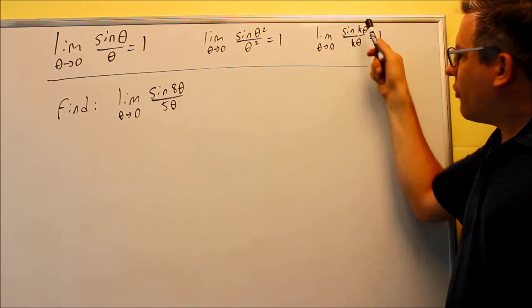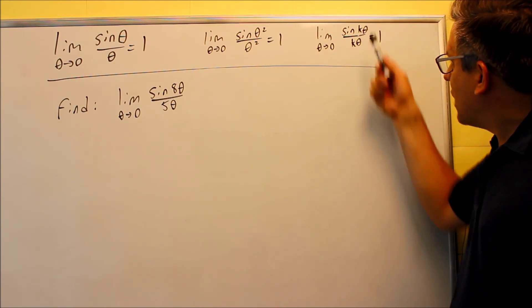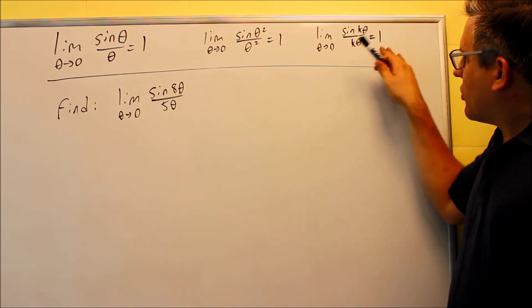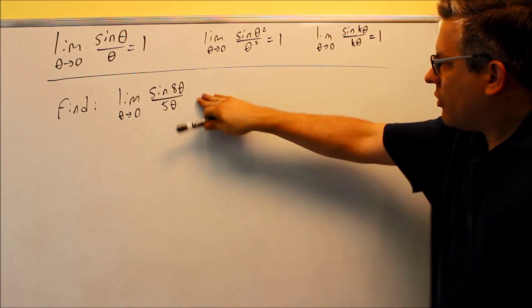This one here is saying that if we have some kind of constant in front of theta, top and bottom, that's going to go to one also. In fact, this is the type of property that we're going to use on this example.